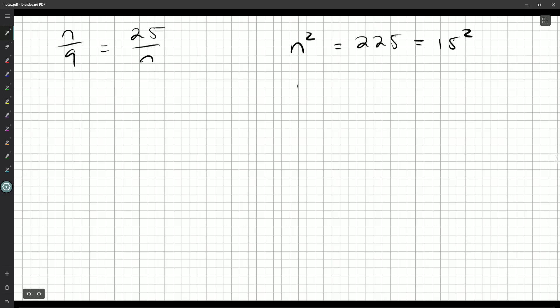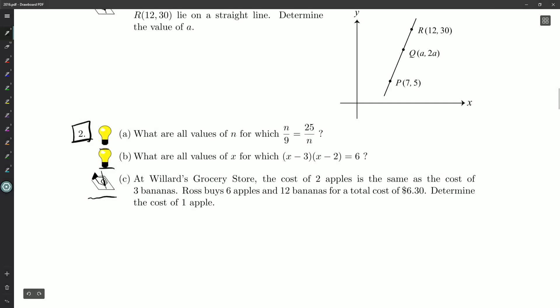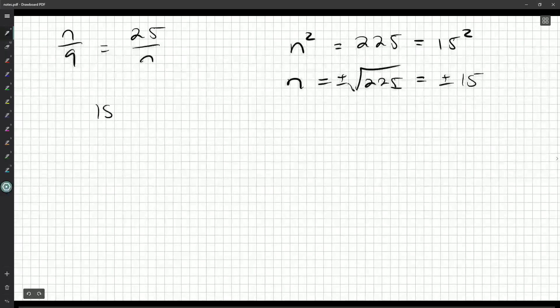Now, you might say, oh okay, well then obviously n is 15. And you would be right, but there are other values. Remember that when we square root, you want to do plus or minus the square root of 225, and so this is going to be plus or minus 15. Because there's no part in the question where they say that n has to be positive. So minus 15 will work just as well as 15. And we want to get both values. So we'll say 15 or minus 15.